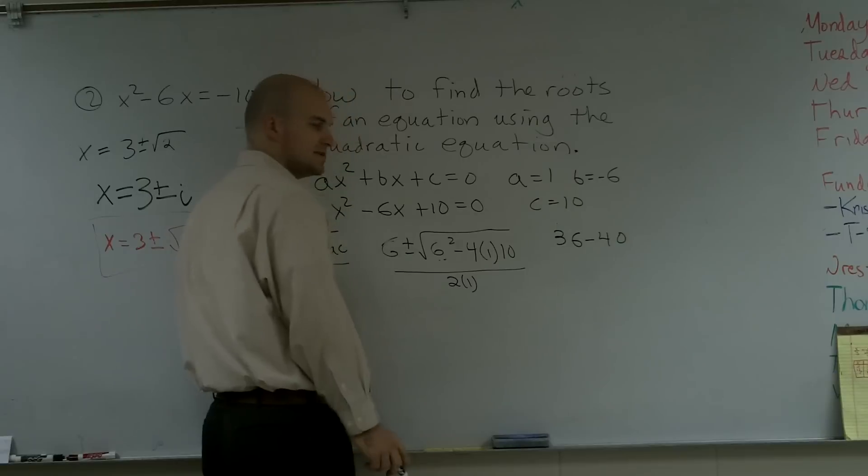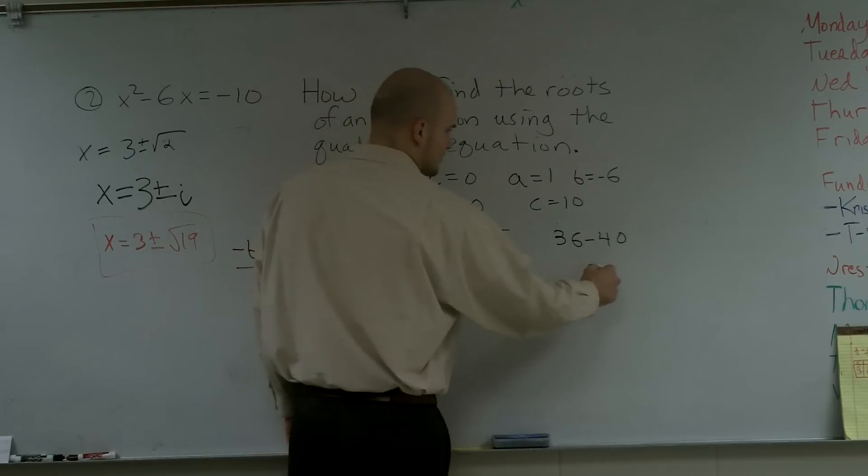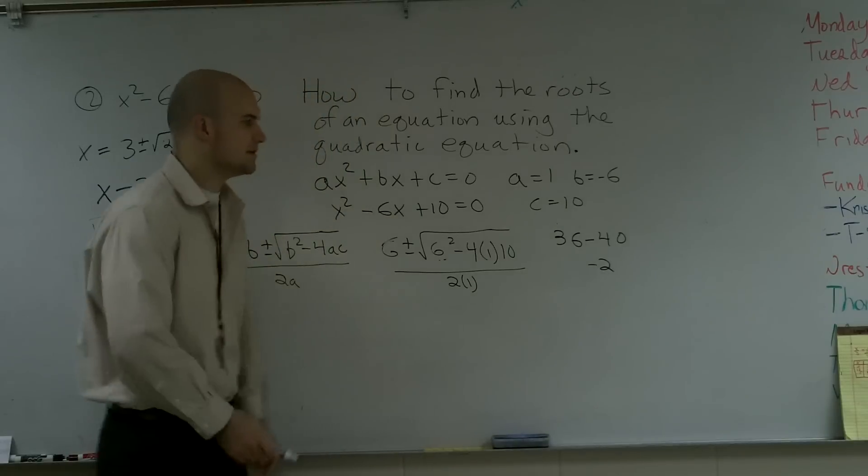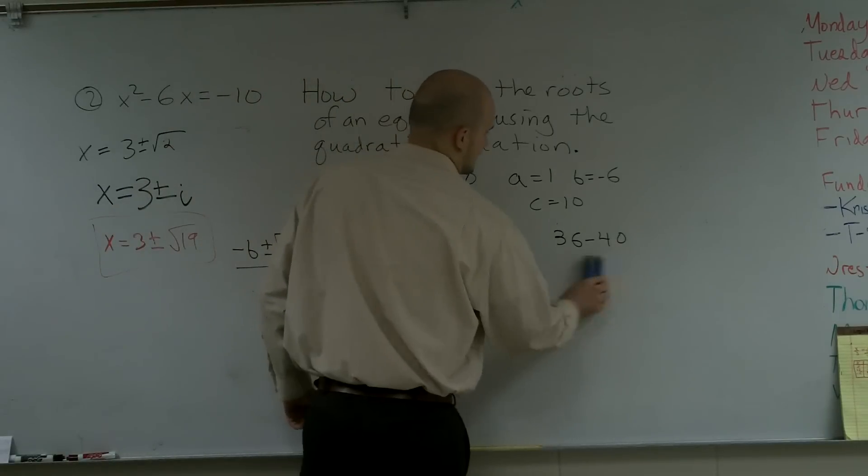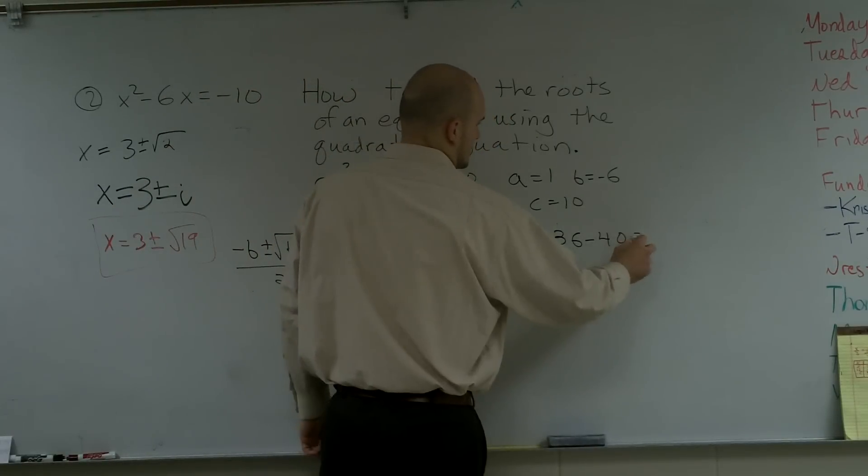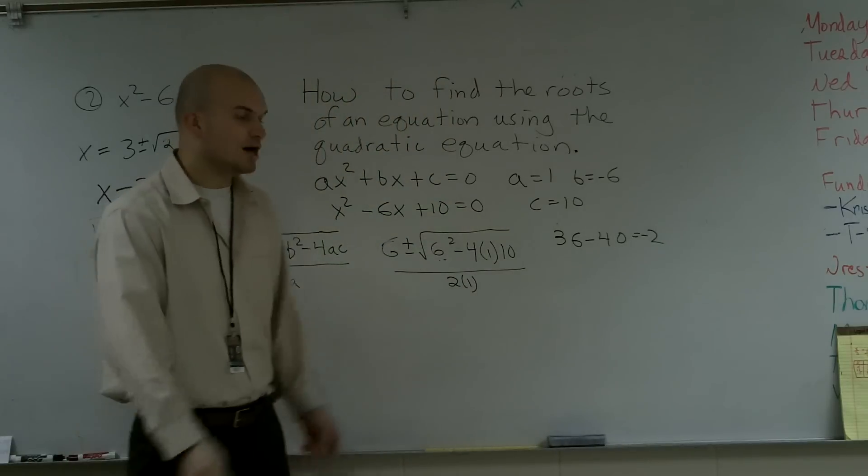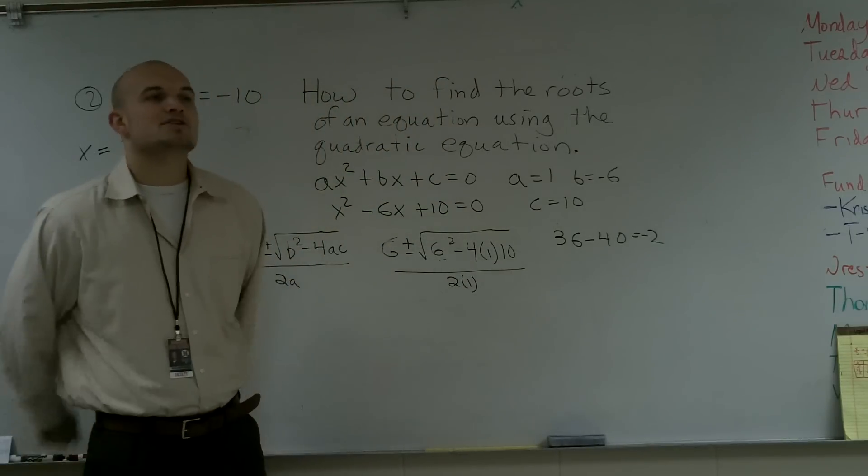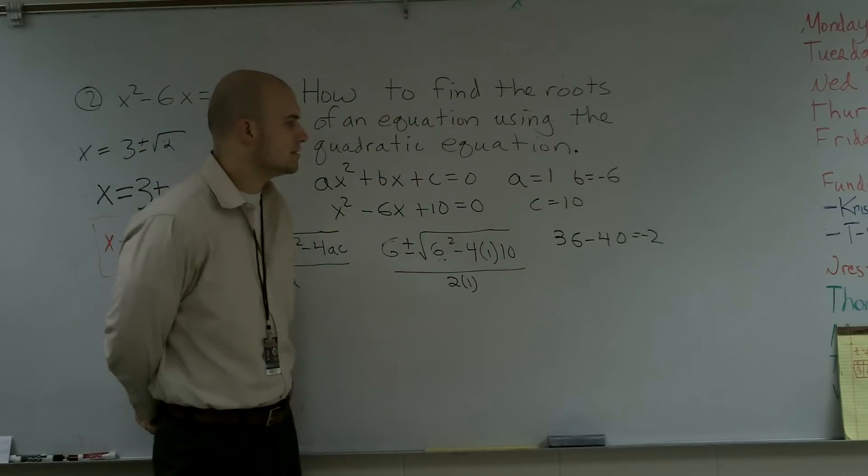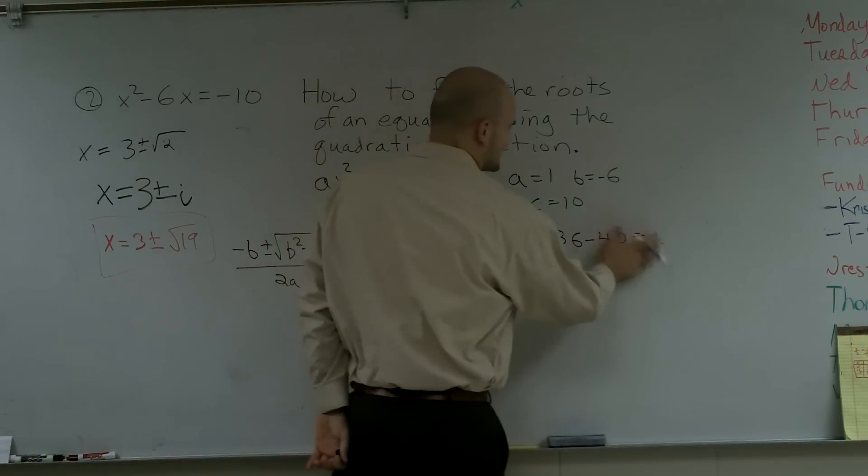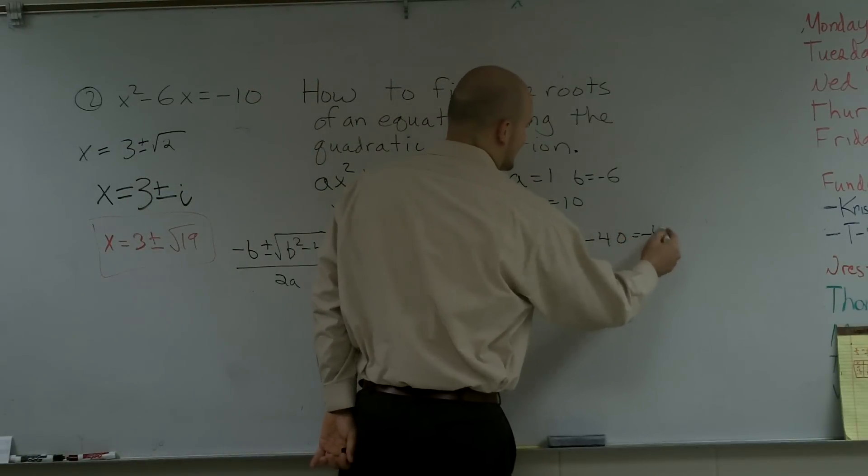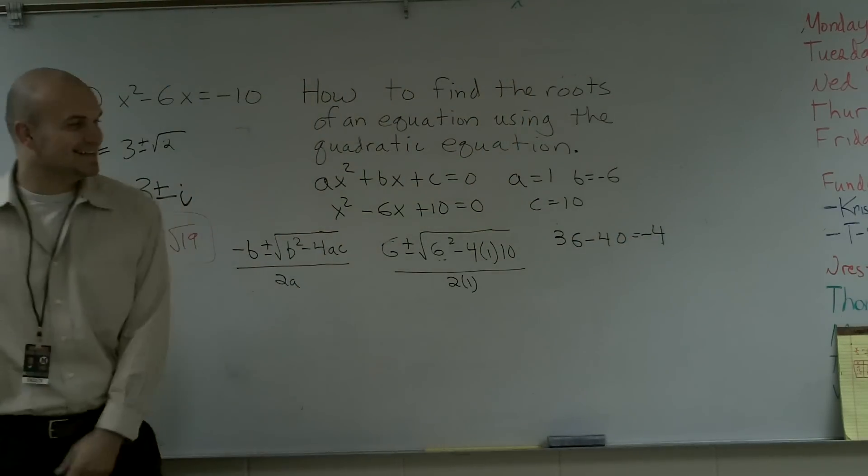And 36 minus 40 is negative 2. And if you guys can remember your rules for a discriminant, whenever your discriminant... I'm thinking ahead of my problem. It's going to equal negative 4.